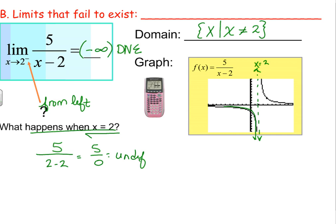And this would be another example of unbounded behavior for a one-sided limit, because we were just coming in from the left side. Unbounded behavior.